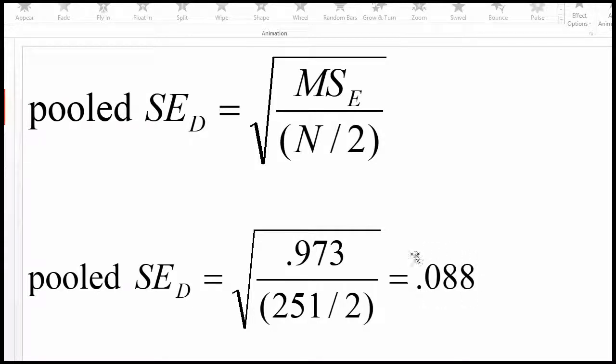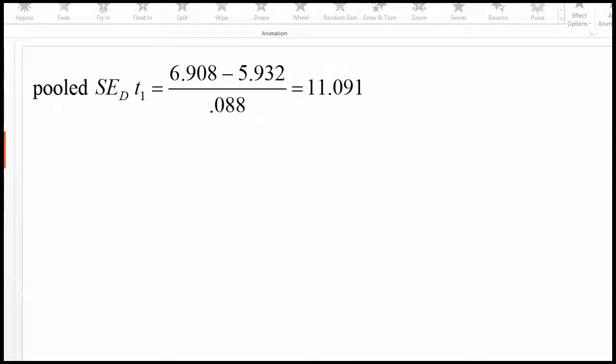And that gives me a pooled standard error of 0.088. Now with that pooled standard error of the difference between related means, I can then calculate pooled standard error difference t values, which are simple main effects.